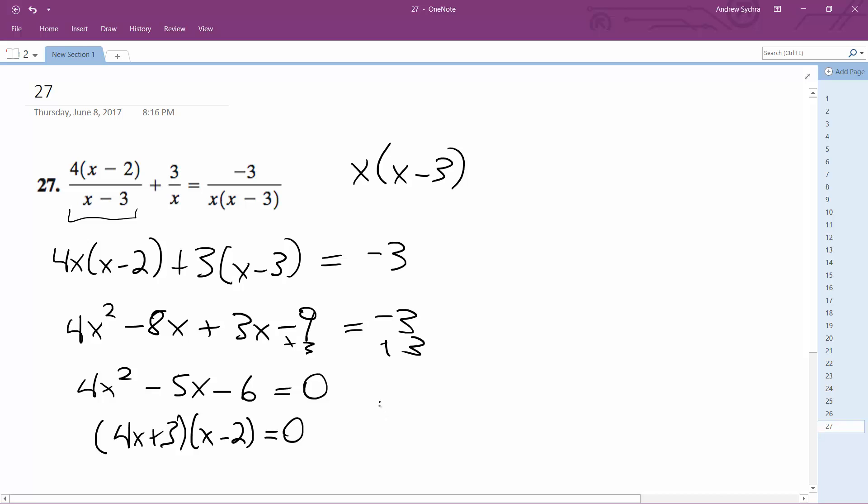So what we're left with is x is equal to negative 3 over 4 and 2. And that's it, based off of what we have here for the final portion.